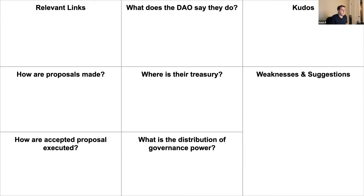We also want to know where their treasury is and how power is distributed. Is there any civil resistance, or could somebody have a hundred addresses and a hundred votes and we don't realize it's all the same person? Then we highlight things we think the DAO has done well and things it could improve on.